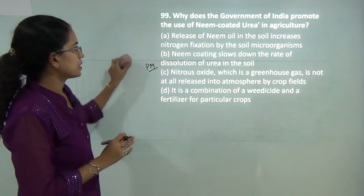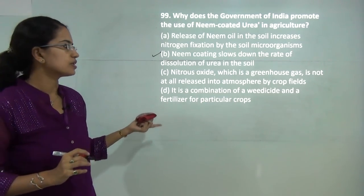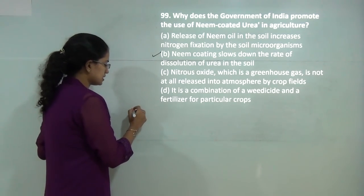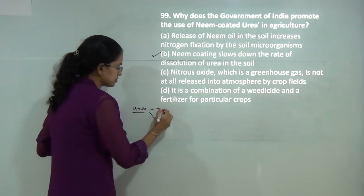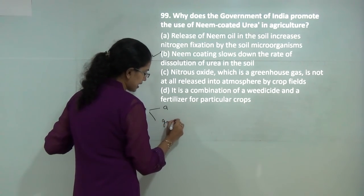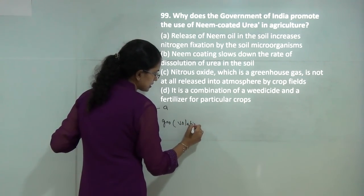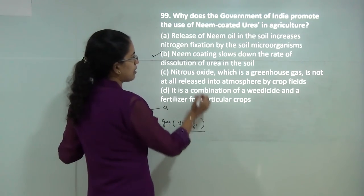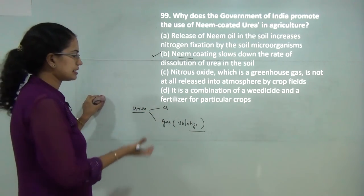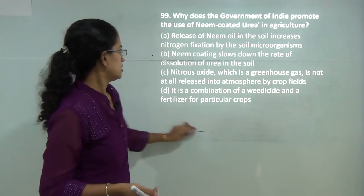Neem-coated urea is used for slowing down the rate of dissolution of urea. Traditional urea breaks down into ammonium carbamate and ammonia gas, which is released quickly through ammonium volatilization. With neem coating — a cheap source for India — the rate of dissolution of urea slows down and it does not volatilize as quickly. So B is the correct option.